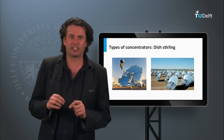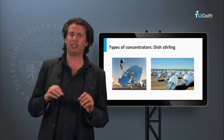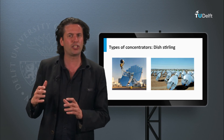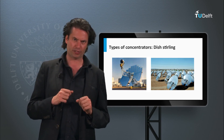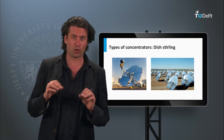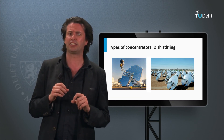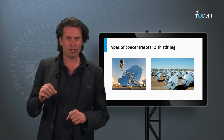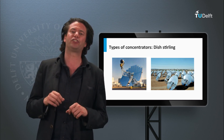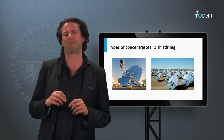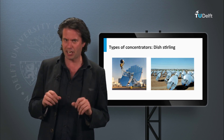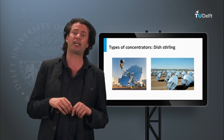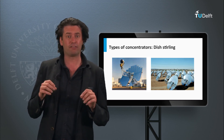Another important concentrator system is the dish-Stirling. A dish-Stirling or dish-engine system consists of a parabolic reflector that concentrates light to the reflector's focal point, where the working fluid absorbs the energy, heating up to 500 degrees Celsius and operating a heat engine. These systems provide an overall efficiency of 31 percent, which is rather high. Several projects have been developed using this technology, such as the Big Dish in Canberra, Australia, or the NSTTF in Phoenix.